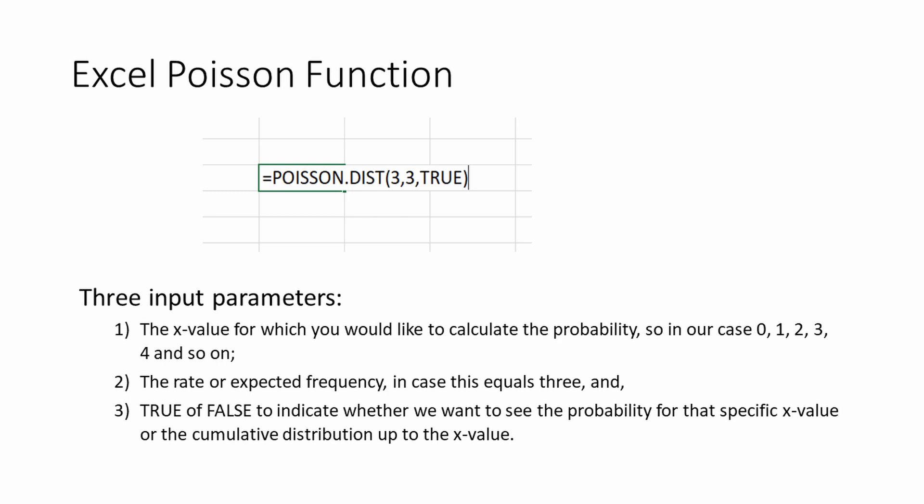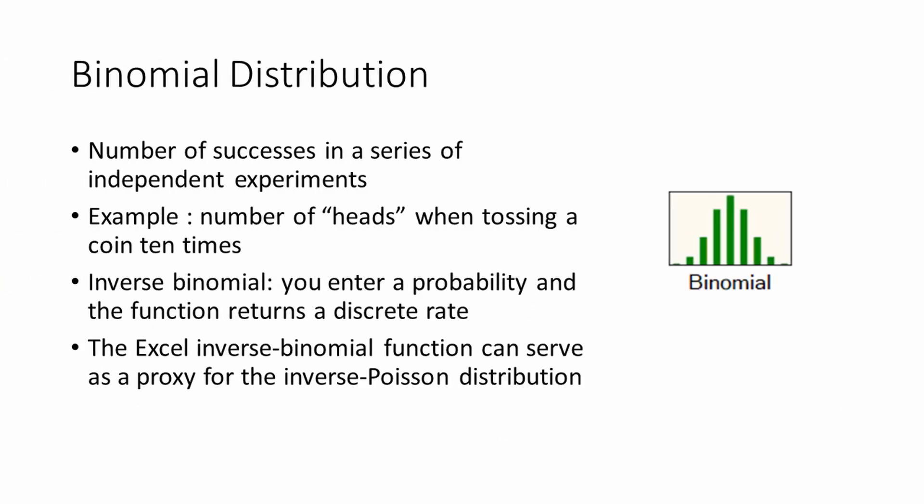This poses a problem for those who use Excel as their modeling and simulation platform. What we want is to build a generator that outputs random numbers following the Poisson distribution. We can circumvent this problem by using the inverse binomial distribution. We recall that the binomial distribution can model the probability of, for instance, the number of heads when flipping a coin 10 times.